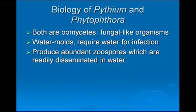They produce abundant zoospores, which are readily disseminated in water. Zoospores are spores that can swim because they have two flagella, sort of like oars on them.